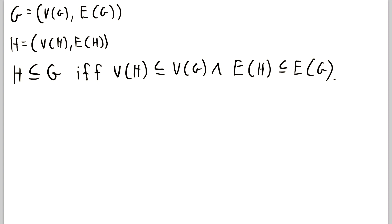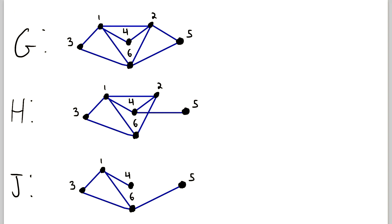So all of that just means that H is a subgraph of G, if and only if everything in H is also in G. So if H has something in it that G doesn't, then H is not a subgraph of G. But if G has in it everything that is in H, then H is a subgraph of G. So now let's look at some graph diagrams. So here we've got three graphs, G, H, and J.